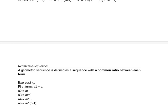The geometric sequence is defined as a sequence with a common ratio between each term, where the common ratio cannot be zero.